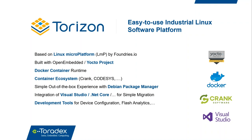Using containers, we plan to provide a rich ecosystem of partner containers such as the Crank container featured in this webinar. By default, Torizon will have a Debian-based container for a simple out-of-the-box experience familiar to most Linux users. Toradex also plans to provide integration for most popular IDEs and frameworks, making development smooth and easy. Torizon will also feature various development tools that will simplify the process.